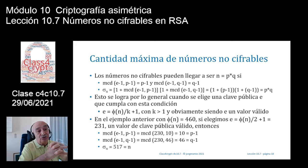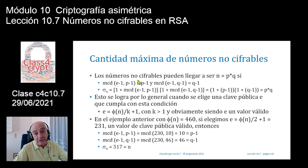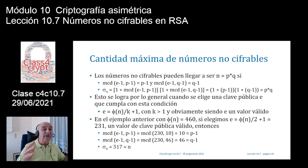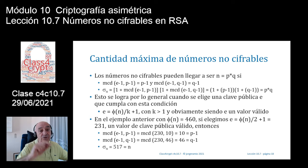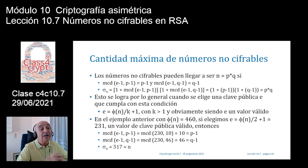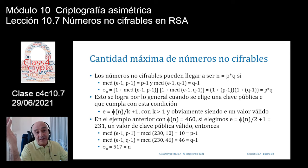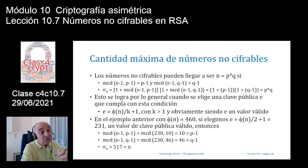Afortunadamente esto no se va a dar en las claves reales. En las claves reales P y Q son números de 1024 bits, el módulo N es de 2048 bits, y la magnitud de φ(N) también serán 2048 bits. Todo el mundo utiliza la clave pública estándar: el número 4 de Fermat, 2 elevado a 16 más 1, es decir 65.537, que tiene solamente 17 bits.